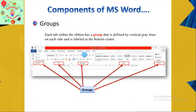The next component is Groups. Each tab within the Ribbon has groups that are defined by vertical gray lines on each side and are labeled at the bottom center.